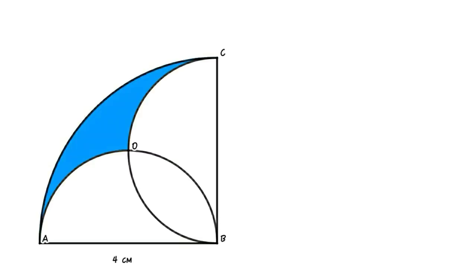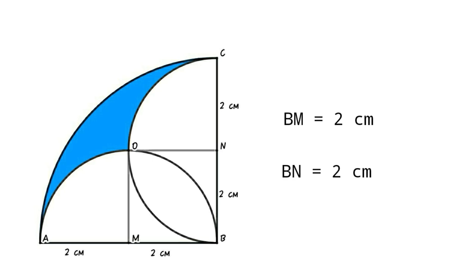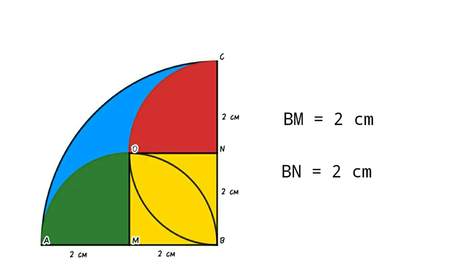Let O be the meeting point of the two semicircles, and M and N are the centers of the semicircles. Then BM equals 2 cm and BN equals 2 cm. Connect O to N and O to M — then we can form a square and two smaller quarter circles.